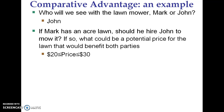For Mark, the price would have to be less than $30, because he can mow the lawn in one hour and his opportunity cost is giving up bookkeeping for one hour where he could have made $30. So if John says he wants $35 for the lawn, Mark would say he'll just do it himself. So the price for this trade has to be somewhere between $20 and $30.